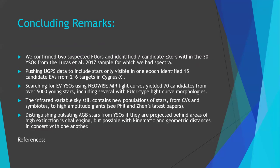That was the end of my thesis, so here are the concluding remarks. We confirmed two new FUORs and identified seven candidate EXORs from 30 spectrally observed YSOs from Phil's 2017 sample of eruptive variables in the Northern Hemisphere. We pushed UGPS data to find more, identifying 15 more within Cygnus X, and by expanding further, located up to 70 new eruptive variable candidates in Cygnus X alone. The red variable sky contains new populations of stars to investigate — symbiotes, cataclysmic variables, and more. You can also distinguish AGB stars from YSOs if you try hard enough. Apologies — this is a previous version of my talk and the references are missing. Thank you very much.